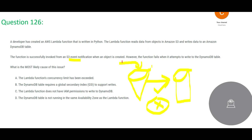One option says the function's concurrency limit is the issue — but the function is failing entirely, not just partially, so that is not it. Another option says DynamoDB needs an index to support writes — but indexes are required for reads in DynamoDB, not for writes. Another option suggests DynamoDB is not running in the same Availability Zone as Lambda.